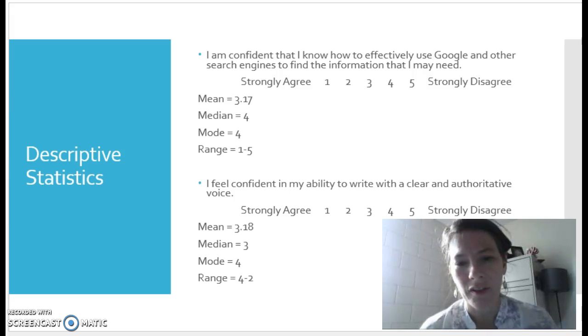So you can see it's not that different in terms of the mean from the other question, but the range is a bit smaller. And the range tells me that while there's more variation here in students and whether students feel very confident or not very confident in their ability to use Google, there's a smaller range here. So in general people feel about middle ground in terms of their ability to write with an authoritative voice.